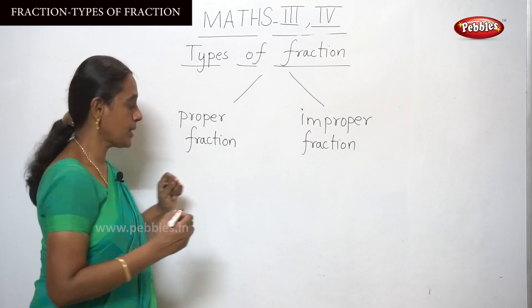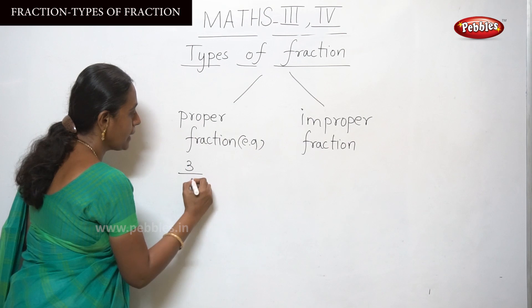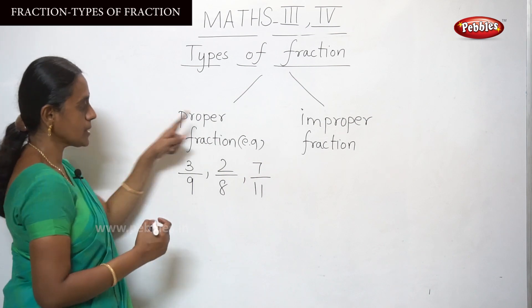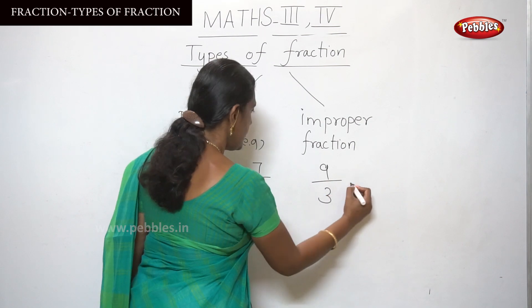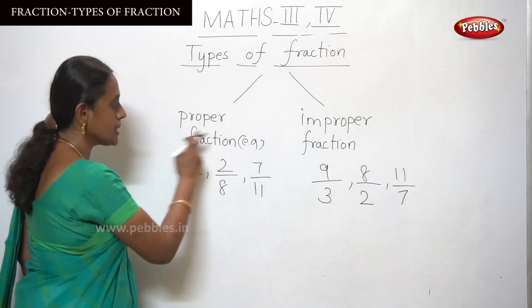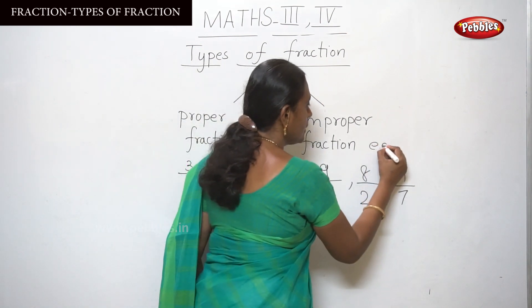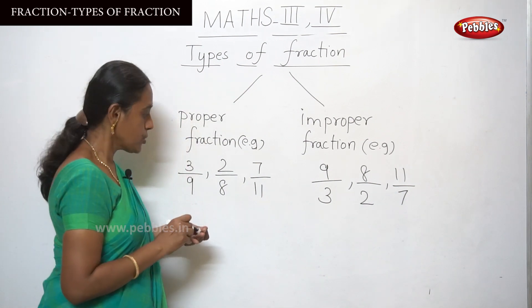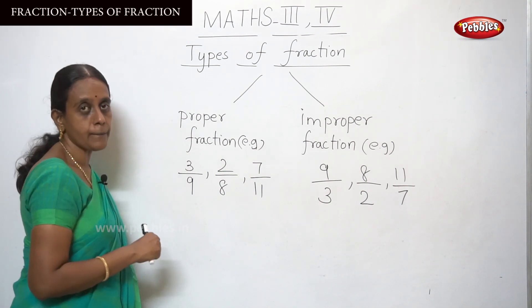Let me classify them. Here are examples: 3 by 9, 2 by 8, and 7 by 11. Observe the numbers in proper fraction. Here, see the numerator and denominator — you should observe that the numerator is somewhat smaller than the denominator.